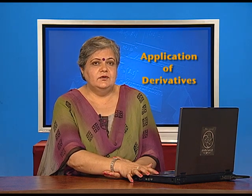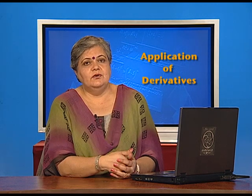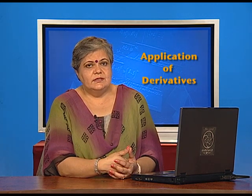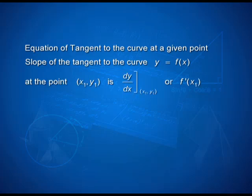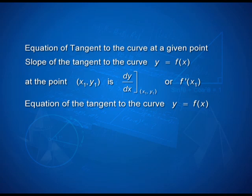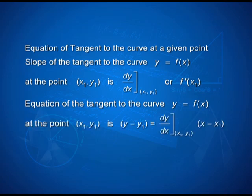Once this is understood, what we need to figure out is how to find the equation of the tangent to the curve at a given point. The slope of the tangent to the curve at the point (x₁, y₁) is the value of the derivative at that point. It can be represented as dy/dx at (x₁, y₁), or f'(x₁). The equation of the tangent to the curve y = f(x) at the point (x₁, y₁) is y − y₁ = (dy/dx)|₍ₓ₁,ᵧ₁₎ · (x − x₁), coming from the simple slope-point form of the straight line.